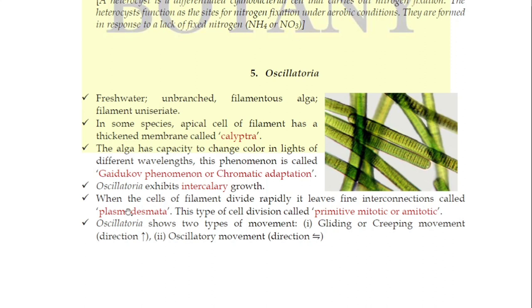Sometimes, when cells divide rapidly, they leave behind some fine connections called plasmodesmata. This type of cell division is referred to as primitive, mitotic, and amitotic — keep this in mind.